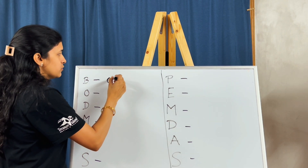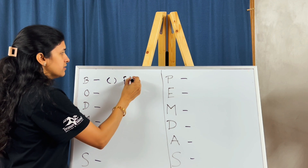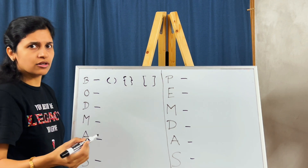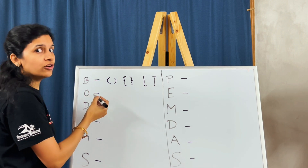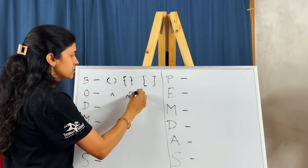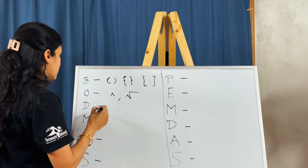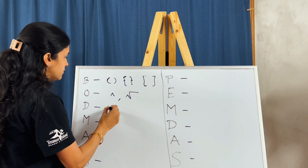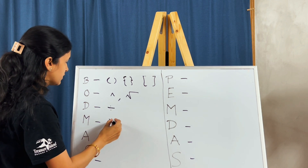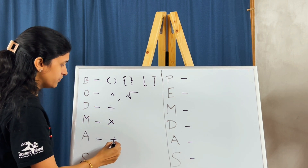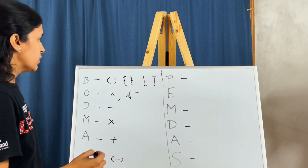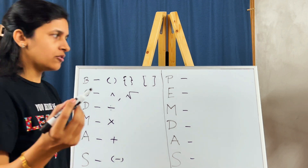BODMAS starts with brackets — small bracket first, then curly, then the biggest bracket. Then comes Order of Power, which includes exponents and square roots. Then comes Division, then Multiplication, then Addition, and then Subtraction. That is our BODMAS rule.